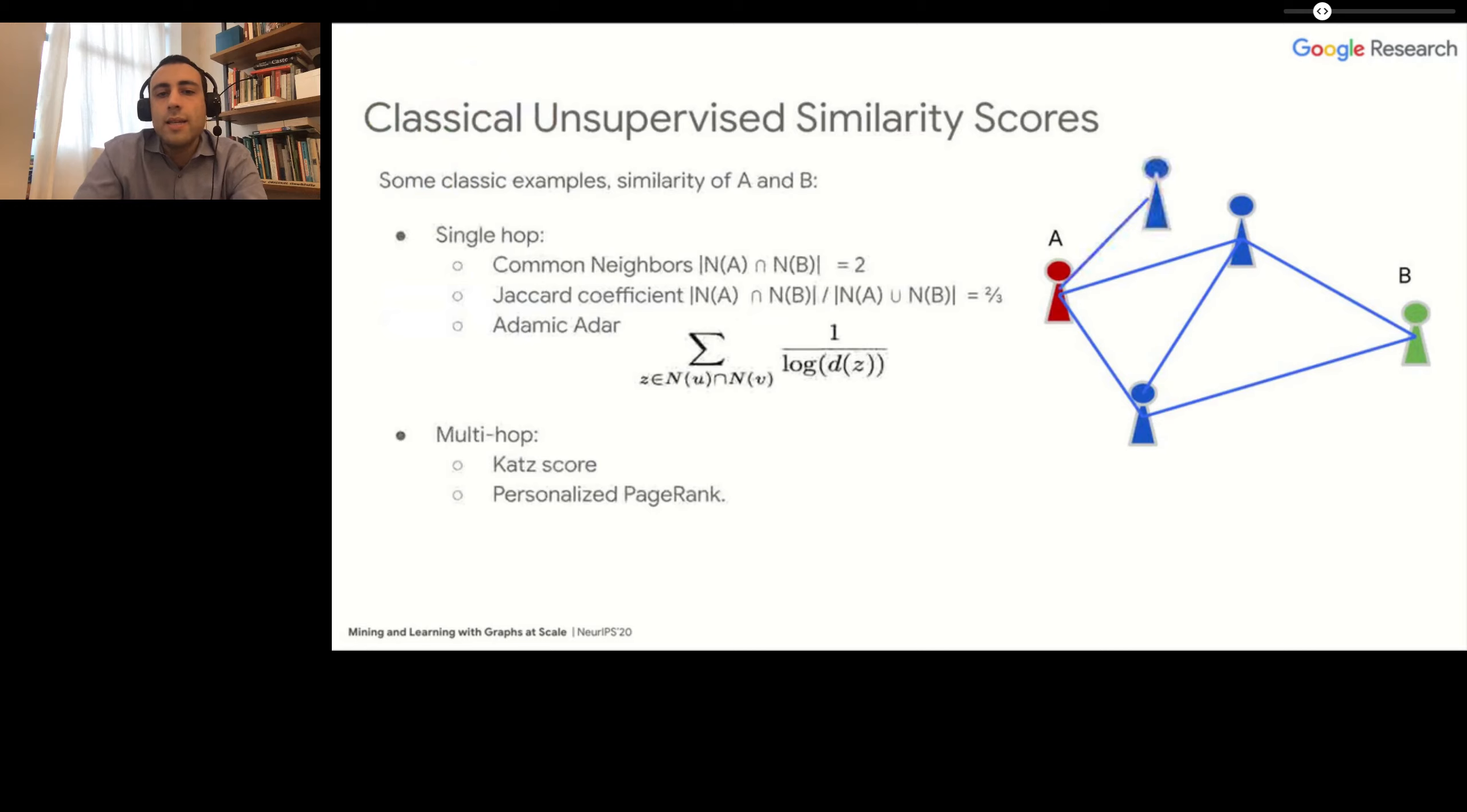Let's see some ways of defining similarity. One simple one is the number of common neighbors. For instance, for nodes A and B, there are two common neighbors, so their similarity would be two. Another option is to look at the Jaccard coefficient of their neighborhoods - the number of common neighbors over the union of their neighbors. Another option is to weight the neighbors in terms of the logarithm of their degree. This is done in Adamic-Adar.